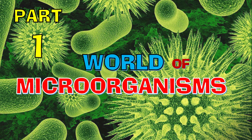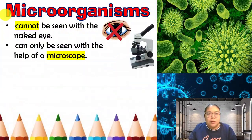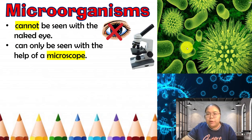Hi students, today we have a new topic for Form 5: the world of microorganisms. From here we will describe some types of microorganisms and also show diagrams so you can see clearly the different types. The first thing to know is that microorganisms cannot be seen by the naked eye — they can only be seen using the help of a microscope.